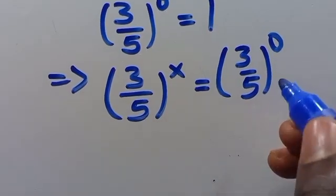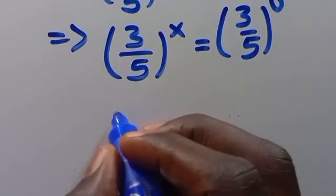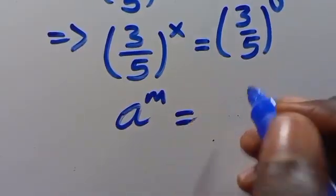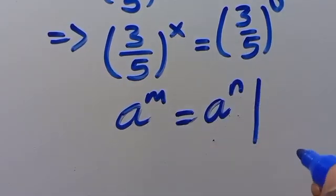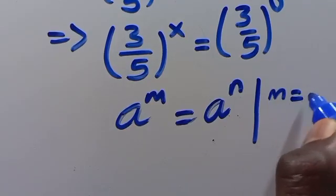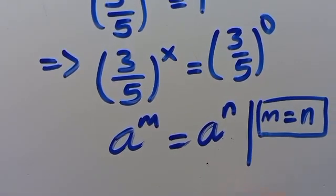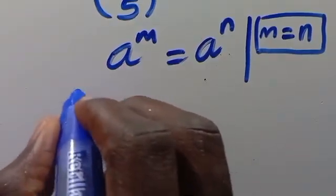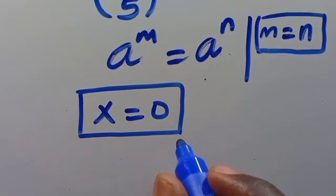Then we look at this expression — they have the same base. So if they have the same base with different powers, let us recall that if a to the power of m equals a to the power of n, and they have the same base with different powers, this implies m equals n. So by applying that law here, we conclude x equals 0. So we still get x equals 0.